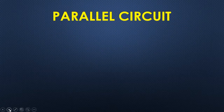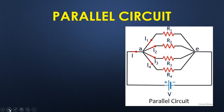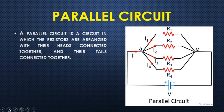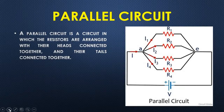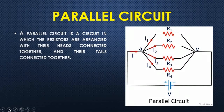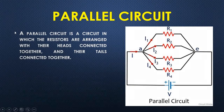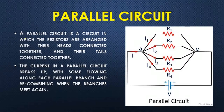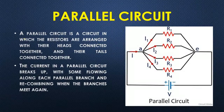Now, coming to the parallel circuit. In a parallel circuit, you connect the resistors with their heads together and tails together. A parallel circuit is a circuit in which resistors are arranged with their heads connected together and their tails connected together. If we take the resistors' heads and connect them to point A, and connect all the tails to point E, then the current breaks up and flows into each branch, with some flowing along each branch and recombining again at point E.